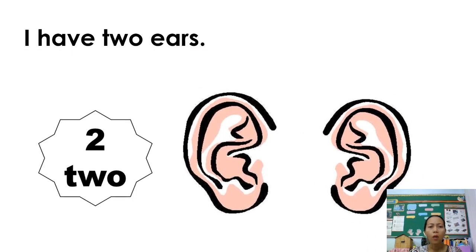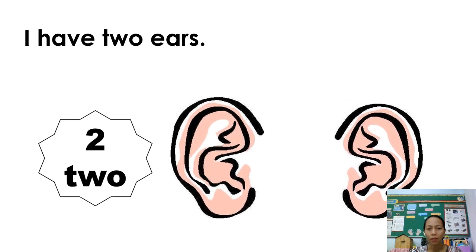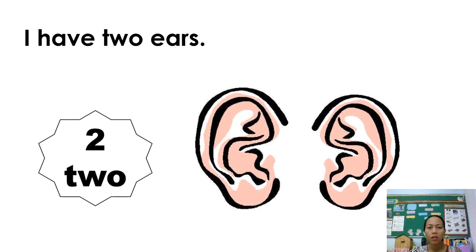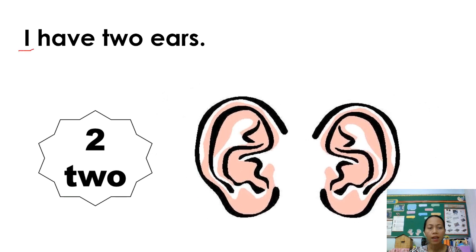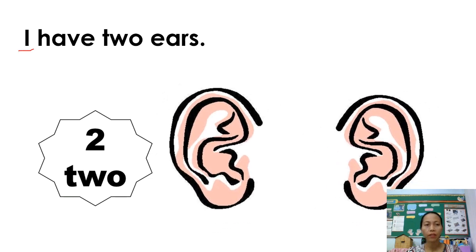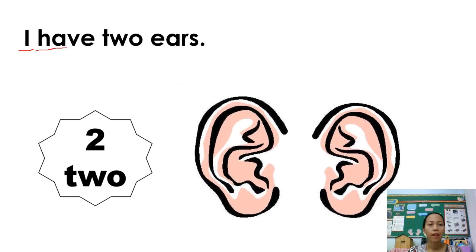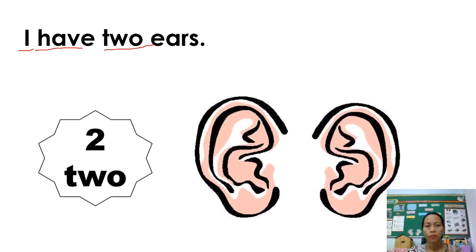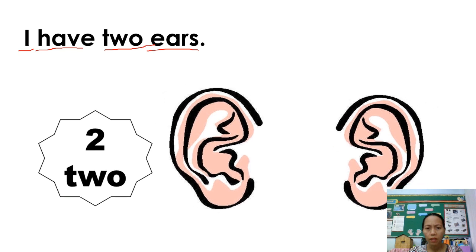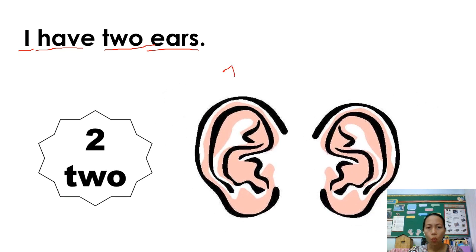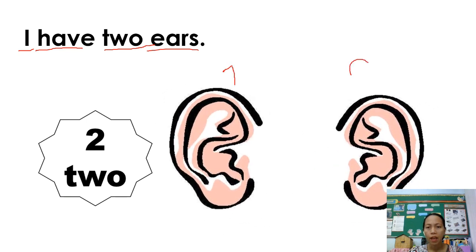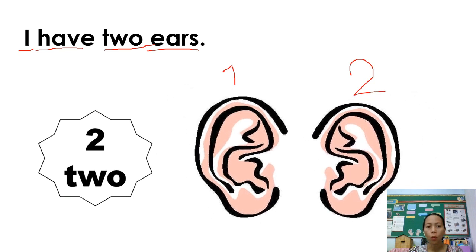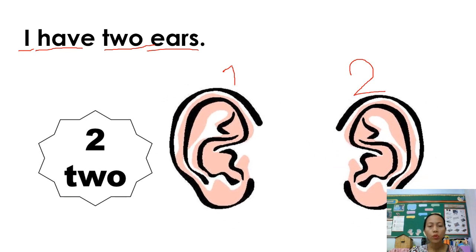Two eyes. How many ears do you have? I, you're pointing to yourself. I have two ears. Can you count together? One and two. Two ears.